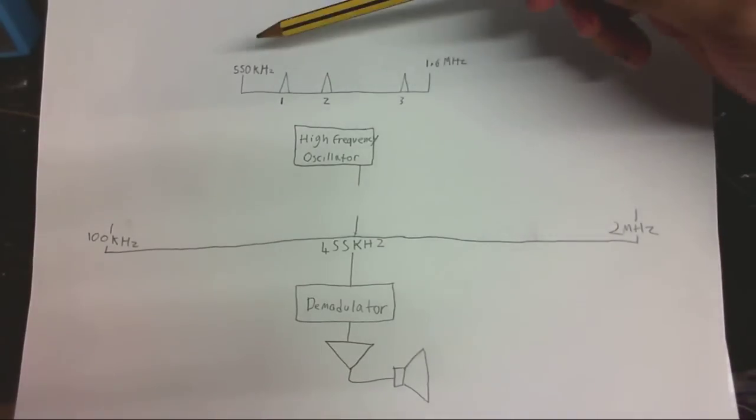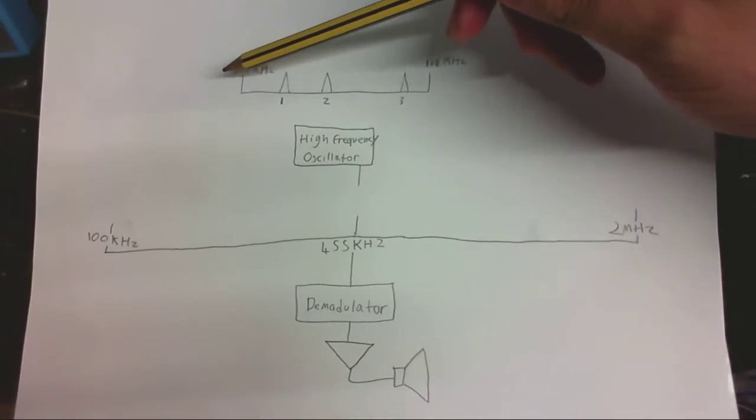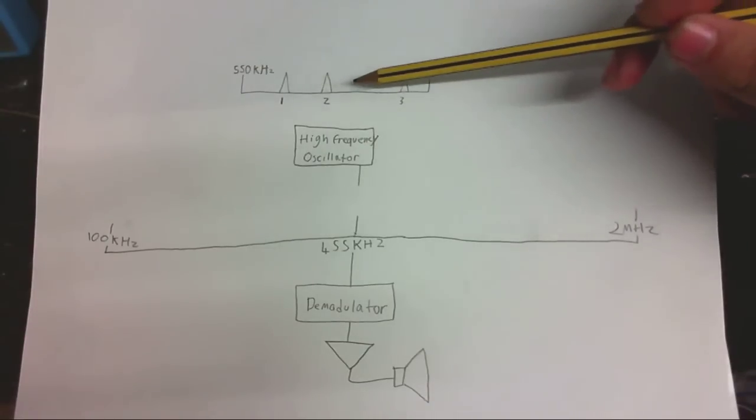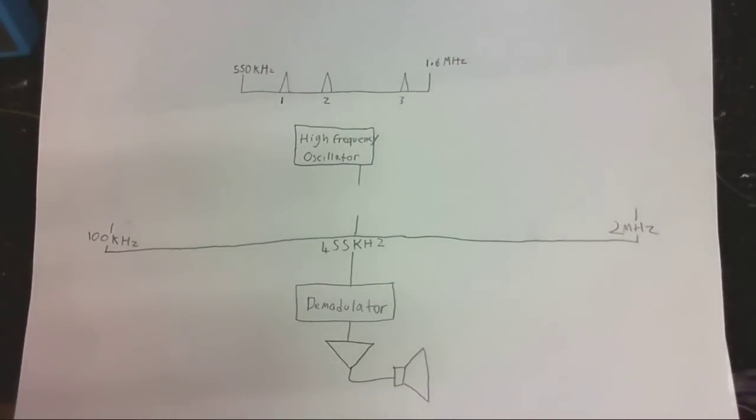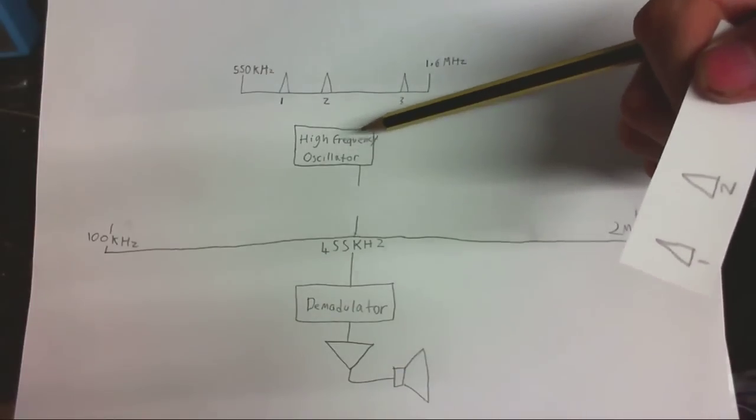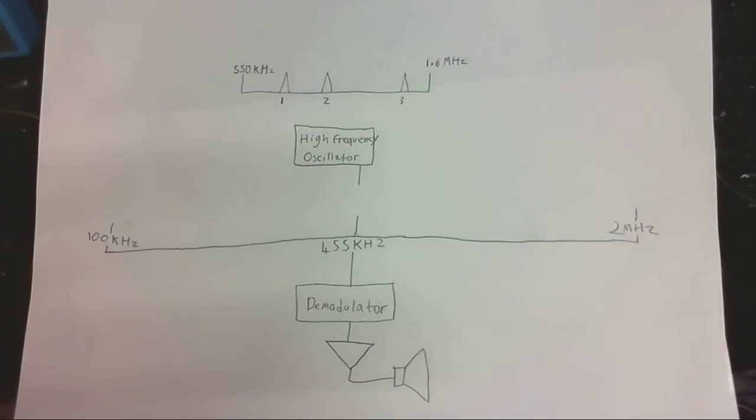Let's say this is the whole AM frequency band. So, we've got 550 kHz down here and 1.6 MHz up here and all these little pyramid-shaped things where the stations are. So, in a superhet radio, we have a high-frequency oscillator that mixes in with what's coming in off the antenna coil.